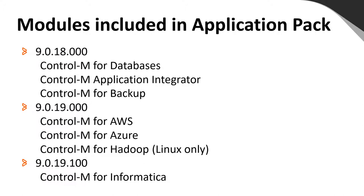What modules are included in the Application Pack? Beginning with the base release of 9.0.18, three modules were introduced: Control-M for Databases, Control-M Application Integrator, and Control-M for Backup. In version 9.0.19 base release, three additional modules were added: Control-M for Amazon Web Services (AWS), Control-M for Azure, and Control-M for Hadoop (Linux only). In version 9.0.19.100, Control-M for Informatica was added. As of the 9.0.20 release, no additional modules have yet been incorporated.